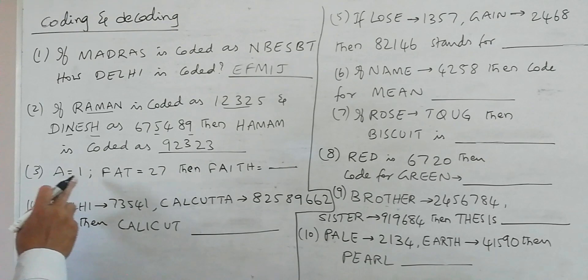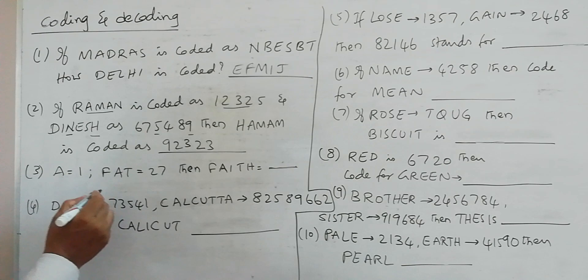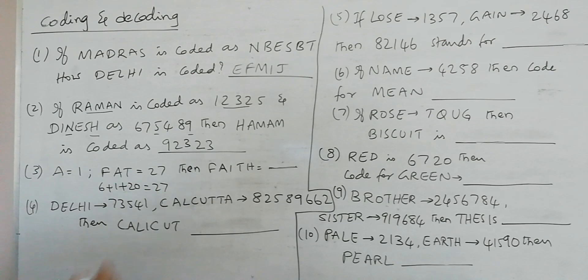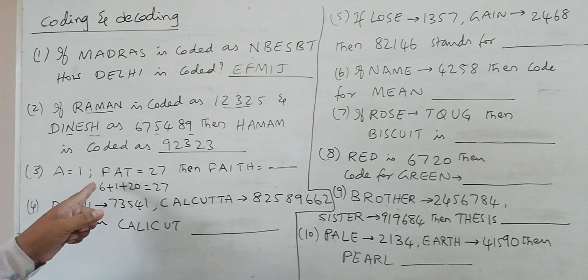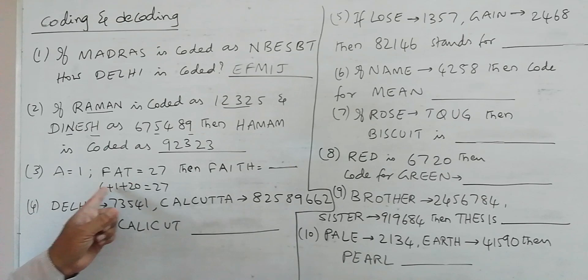So in the next problem here we have A equals 1, FAT is 27. That means F is 6 plus A is 1 plus T is 20, which is 27. So when we give numbers to alphabets from A to Z, that is 1 to 26, then as per that we get A equals 1, and F is 6, and T is 20. So F-A-T, F plus A plus T is 27.